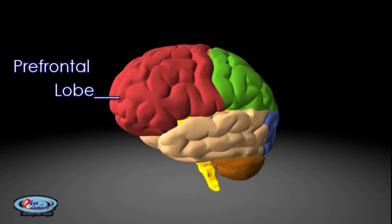This brain region has been implicated in planning complex cognitive behavior, personality expression, decision making, and moderating social behavior. The most typical psychological term for functions carried out by the prefrontal lobe area is executive function.